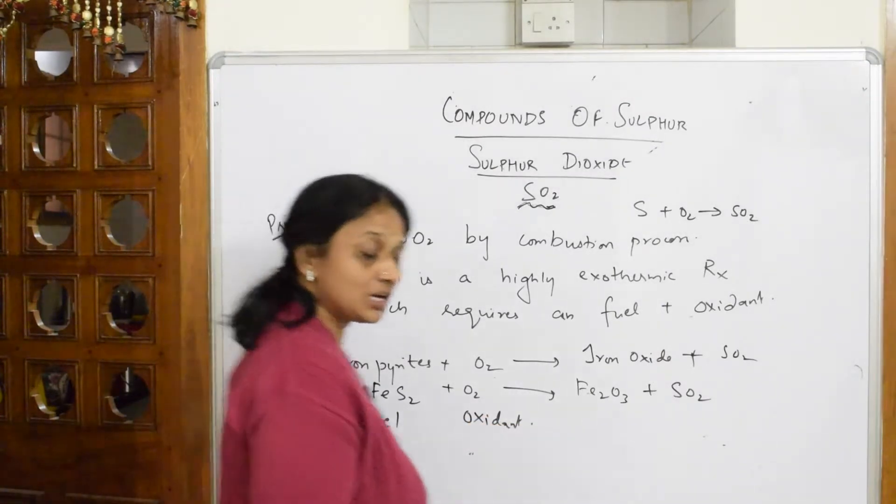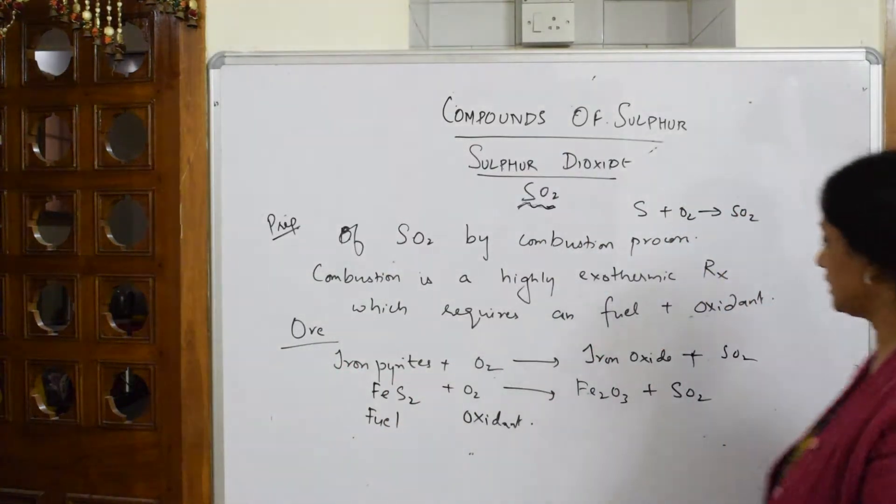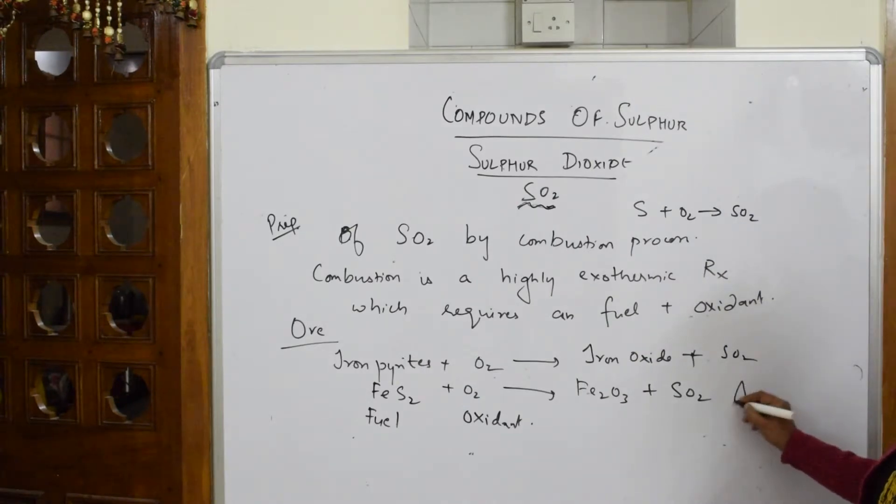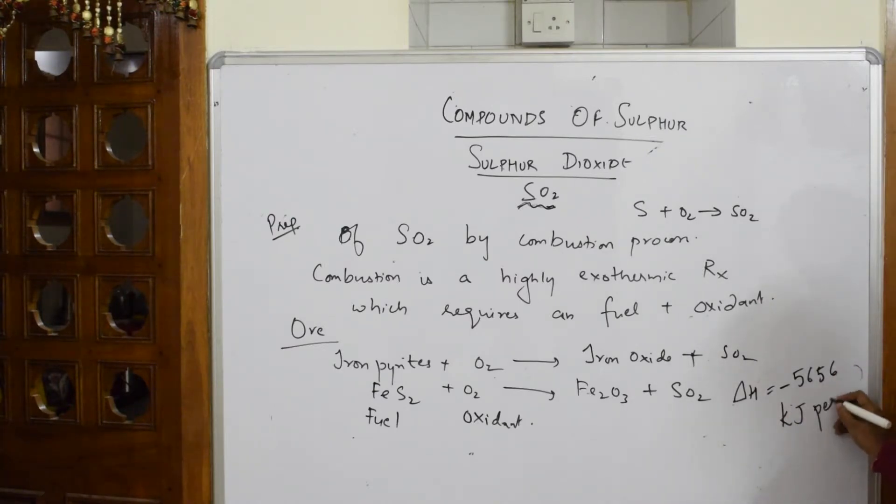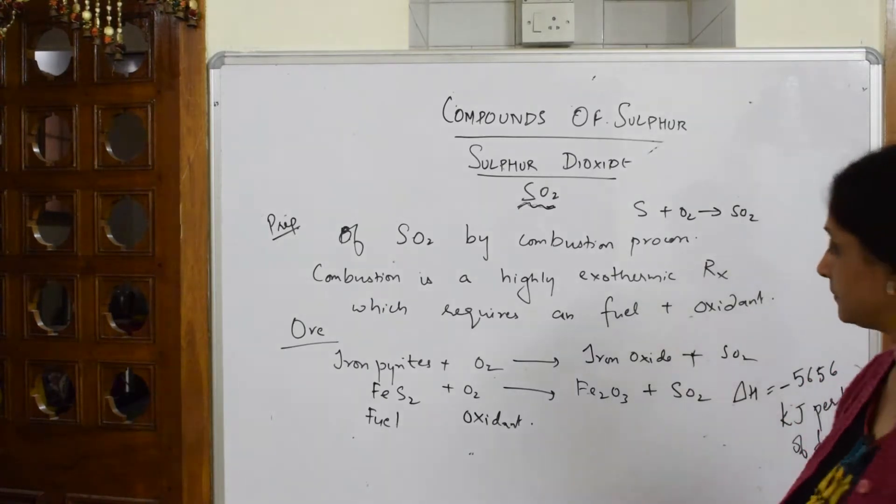Now I also said combustion reactions are highly exothermic. It was observed that the delta H value was negative, that is, the exothermic reaction. How much was it? It was almost minus 5,656 kilojoules per kilogram of the fuel.